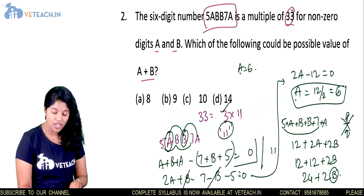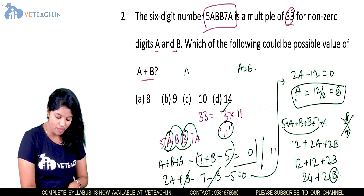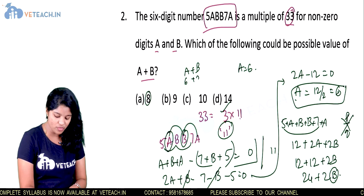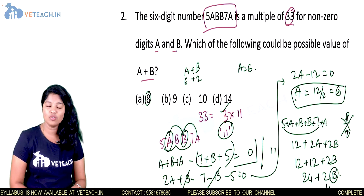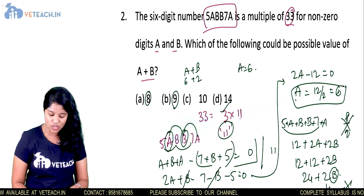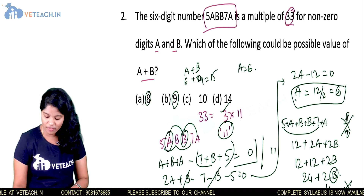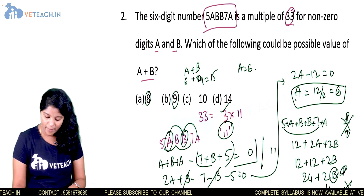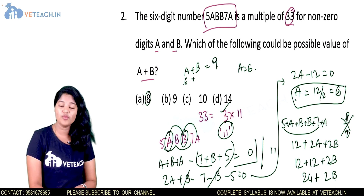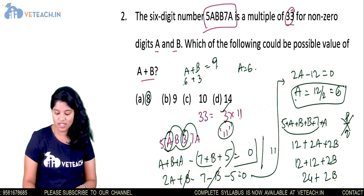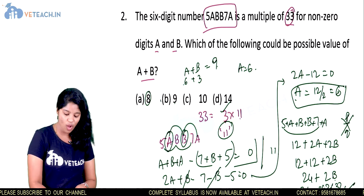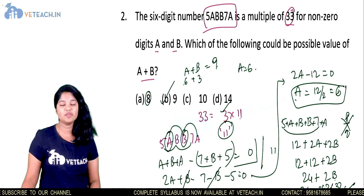Checking the options: if a equals 6 and we consider a plus b equals 8, then b equals 2, giving 24 plus 4 equals 28, which is not divisible by 3. If b equals 9, we get 24 plus 18 equals 42. For a plus b equals 9, b equals 3: 24 plus 6 equals 30, which is divisible by 3. So option B is correct — a plus b equals 9.